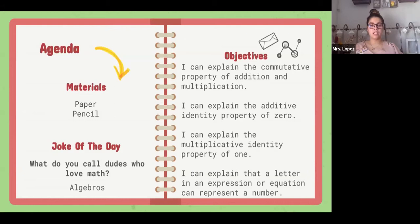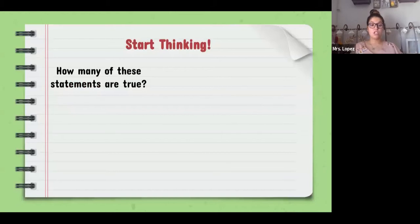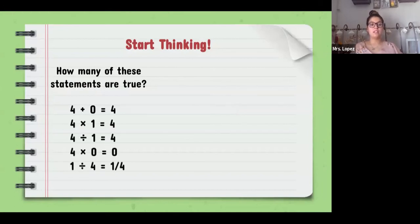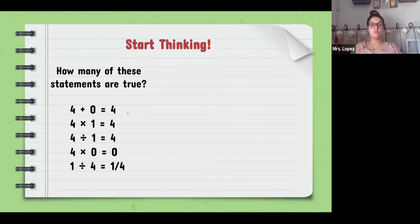So we're going to start by thinking. Look at these equations and ask yourself how many of these statements are true. We have: four plus zero, four times one, four divided by one, four times zero, and one divided by four. Four plus zero equals four — that's true. Four times one is four. Four divided by one is four. Four times zero is zero, because anything times zero is zero. And one divided by four gives us the fraction one-fourth.